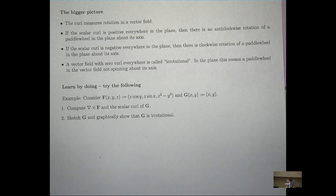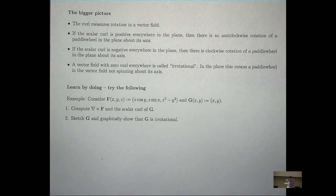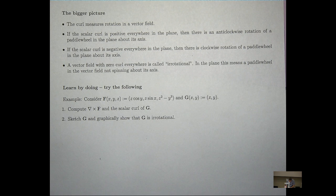Let's move on to the bigger picture. Hopefully you have some idea from the previous discussion that the curl measures rotation of a vector field, the tendency of the vector field to rotate around a point. If the scalar curl is positive in the plane, then there's an anti-clockwise rotation of a paddle wheel about its axis. And similarly, if the scalar curl is negative everywhere in the plane, then your paddle wheel spins the other way. A vector field with a zero curl is called an irrotational vector field. So in the plane, you would drop a paddle wheel in and it wouldn't rotate either way about its axis.